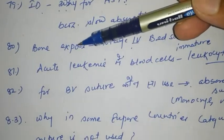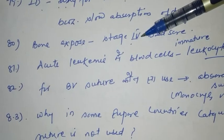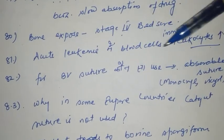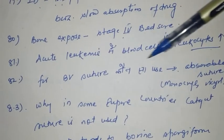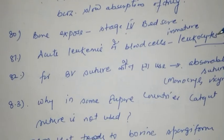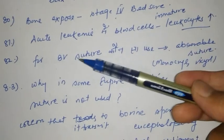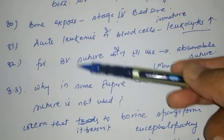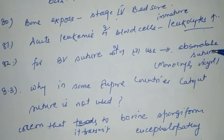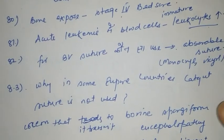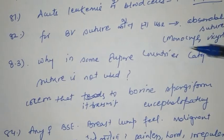For antigen or allergy sensitivity testing, ID (intradermal) injections are given because they are helpful in slow absorption of the drug. Bone exposed — in which type of bedsore? Stage 4 bedsore. In acute leukemia, which blood cells increase? Immature leukocytes increase.